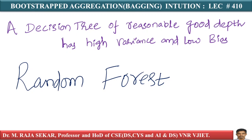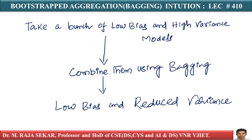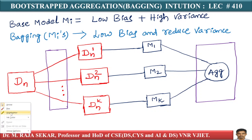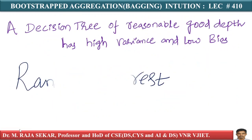Bagging is intuitively a way to reduce variance in your model by combining them using the brilliant strategy of bootstrapping and aggregation, while not impacting the bias. Here, bootstrapping and aggregation are the two stages. We keep the bias low and reduce the variance — that is the crux of bagging.